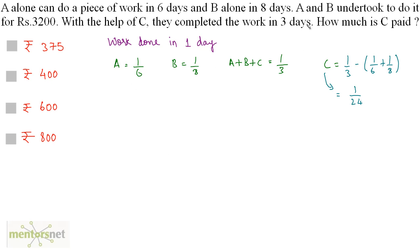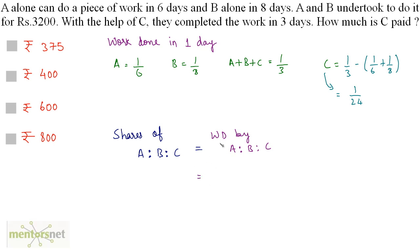Now we want to find how much share C is paid. For that we need the ratio of the shares of A, B, and C, which equals the ratio of work done by each. Work done by A is 1/6, work done by B is 1/8, and work done by C is 1/24. Solving this gives the ratio 4:3:1, which is the ratio of shares of A, B, and C.